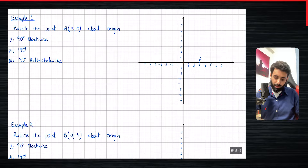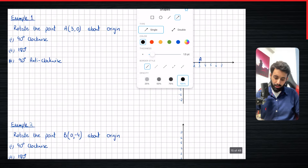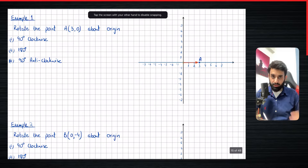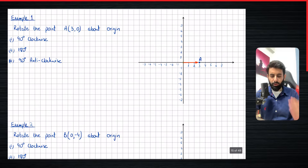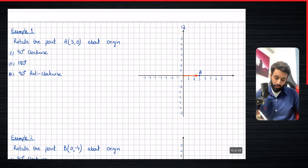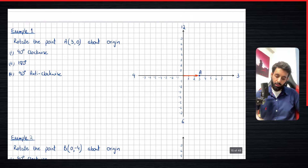Let's start by rotating it 90 degrees clockwise. I'm going to make an arrow from the center, which is the origin in this case. To avoid confusion between clockwise and anticlockwise, I suggest you write 12, 3, 6, and 9 — just the numbers we see on a clock — so that you know what direction to follow.